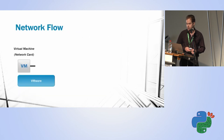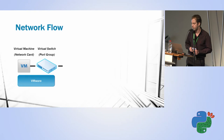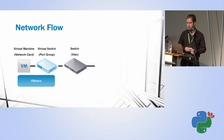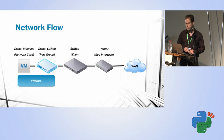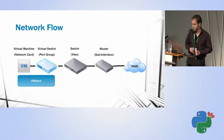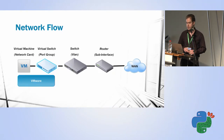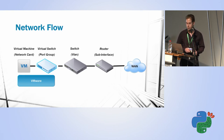Looking at the network flow of the VM, I need to configure a few things: the virtual switch — specifically the port group that connects the virtual environment to the physical environment — the VLAN on the physical switch, and a sub-interface on the router so the VM has a default gateway to connect to the outside world.